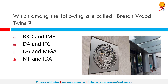Which among the following are called the Bretton Woods twins? The correct answer is IBRD and IMF. The Bretton Woods twins refers to the two multilateral organizations created at the Bretton Woods conference in 1944 — the World Bank's IBRD and the International Monetary Fund.